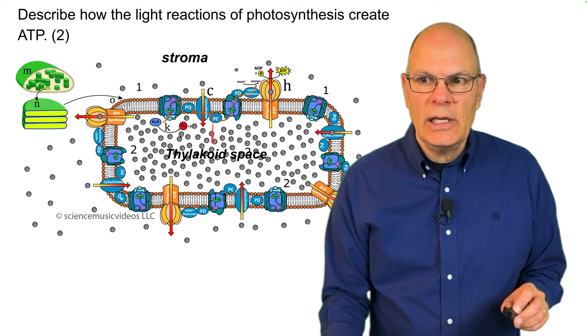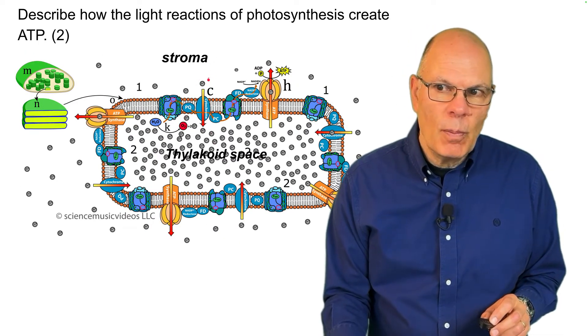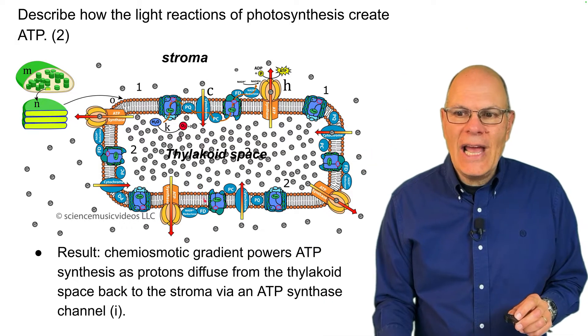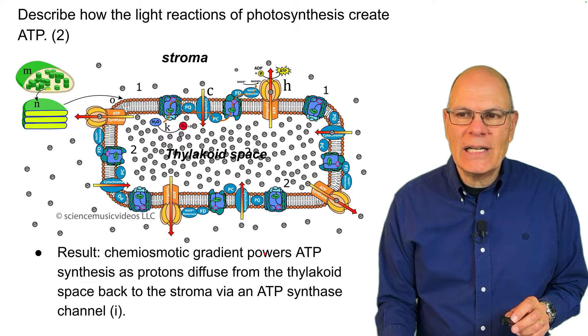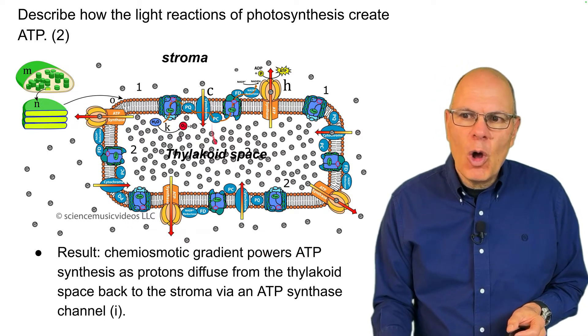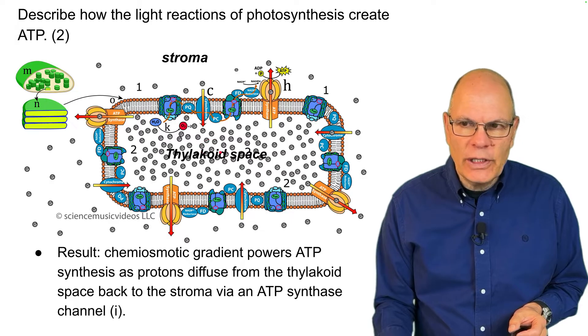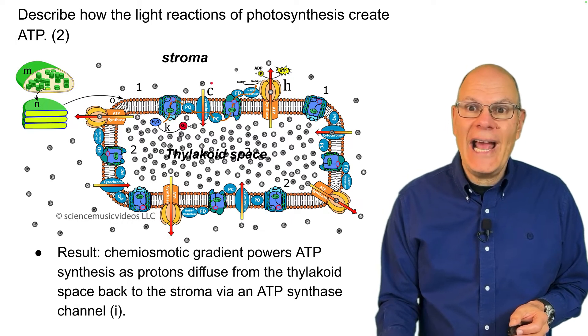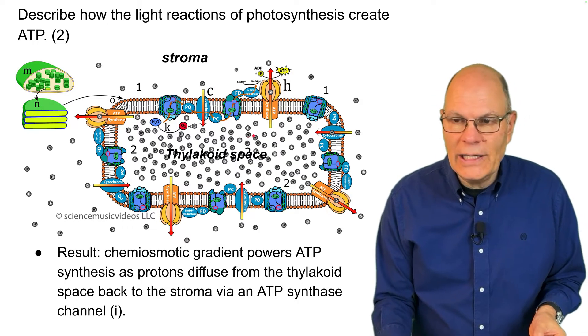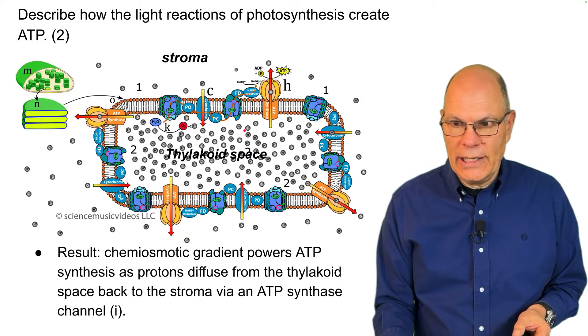So here's the stroma, here's the thylakoid space. We're pumping from the stroma into the thylakoid space. And that creates a chemiosmotic gradient. Chemiosmotic, what does that mean? Well, there are all these protons that are over here, and there are very few over here. It took energy to do that. And that gradient is a diffusion gradient, and it's also an electrical gradient.